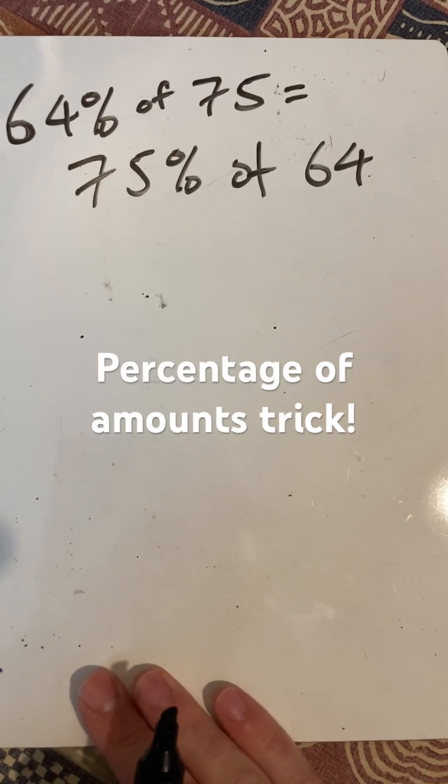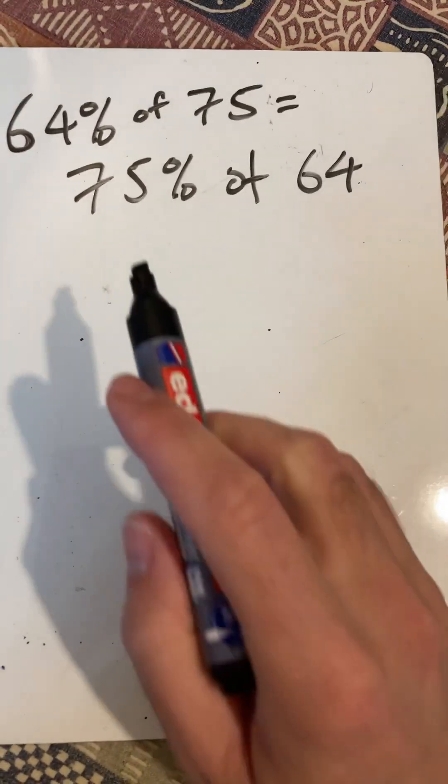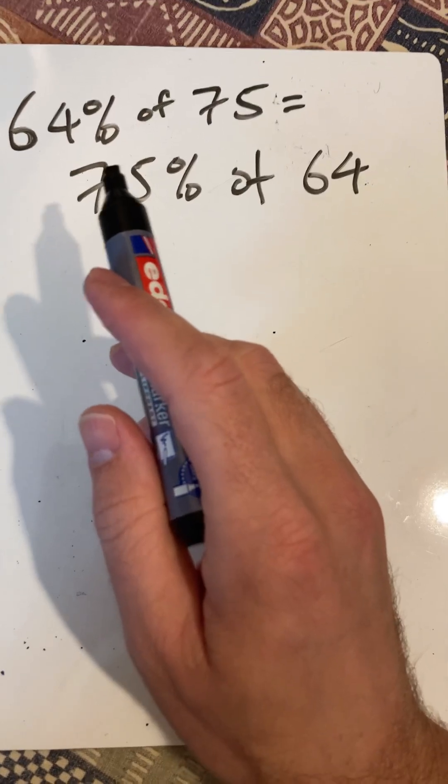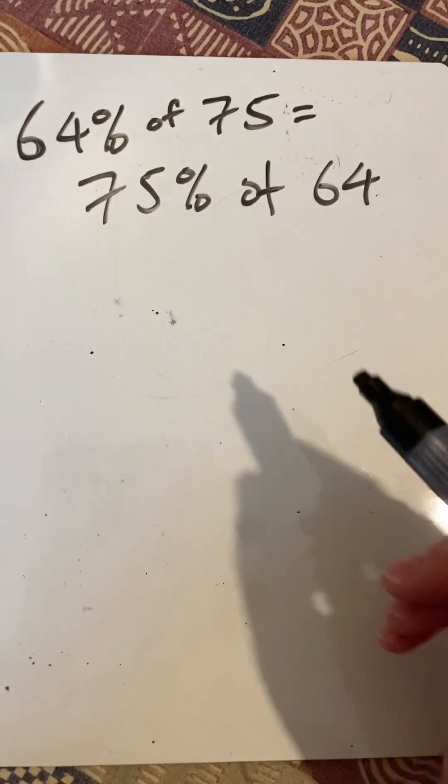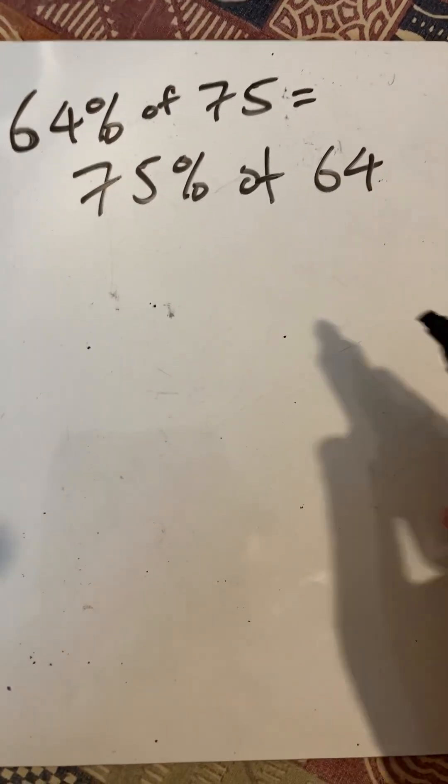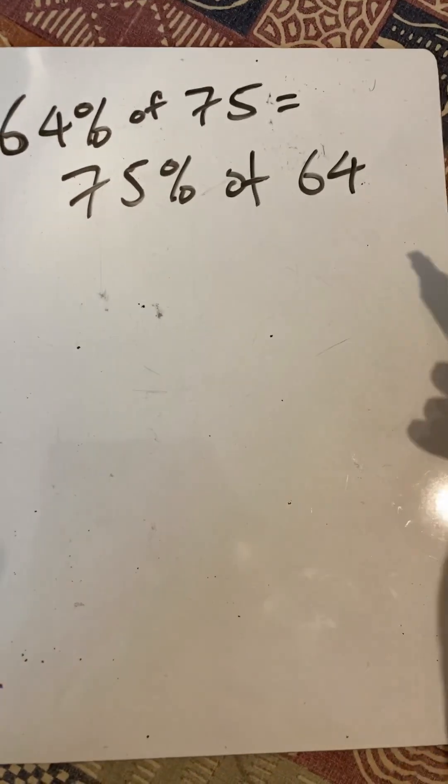Hello and welcome to Martin Maths doing a short on percentage of amounts. One thing we noticed is that a percentage of an amount is the same as if you flip those numbers. So 64% of 75 is 75% of 64. Why does that happen?